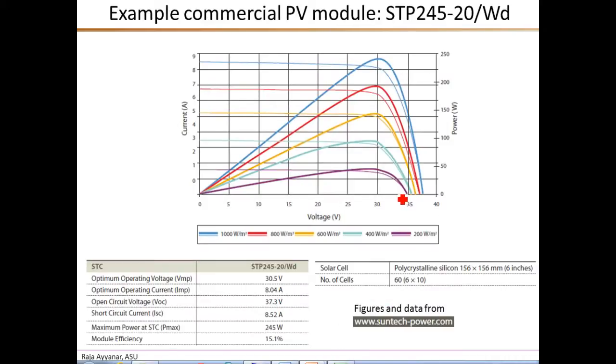Now to illustrate what type of information is available in a typical module data sheet, let's look at an example. This example is from SunTech Power, a major manufacturer of PV panels. And the example corresponds to 245 watts peak panel, STP245.